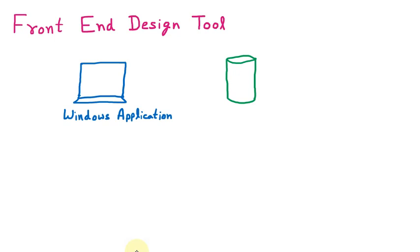So there are different terms: web application which works on the website, mobile application which works on the mobile, and Windows application which works on Windows. Now for any application we are designing, the user interacts with the system. That system may be a Windows application, web application, or mobile application. So all these applications are called the front end.